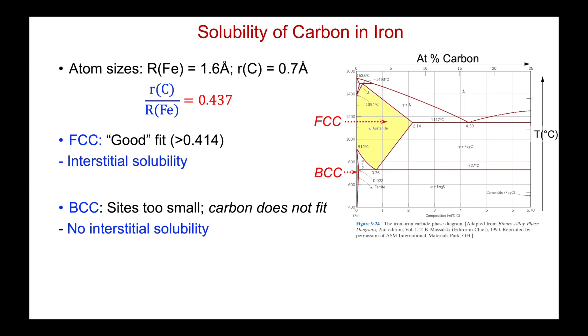But the BCC sites are too small. Carbon does not fit. And that is the reason that we see no interstitial solubility in this region of the phase diagram, where iron wants to transform to the BCC structure. But it cannot accommodate any of the interstitial carbon that was present at the higher temperature in the FCC structure.